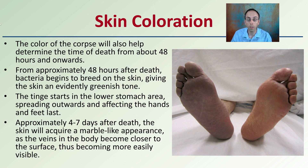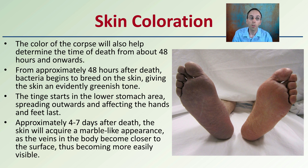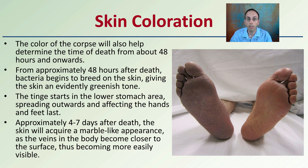We also have skin coloration to take into consideration. The color of the corpse will help determine the time of death from about 48 hours onwards — not reliable under two days, but beyond two days it has a stronger correlation. From approximately 40 hours after death, bacteria begin to breed in the skin, giving it a noticeably green tone. This tinge starts in the lower stomach area and spreads outwards, affecting the hands and feet last. Approximately four to seven days after death, the skin acquires a marble-like appearance and the veins become closer to the surface, becoming more easily visible.